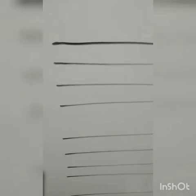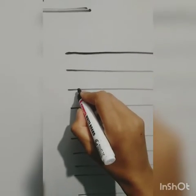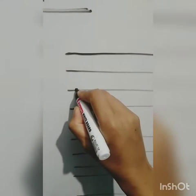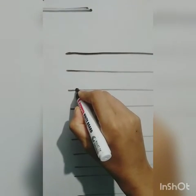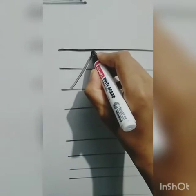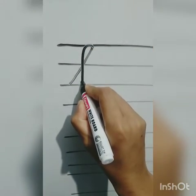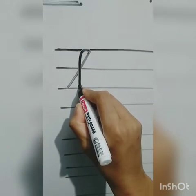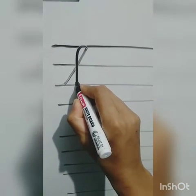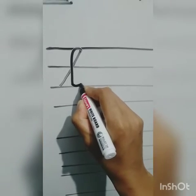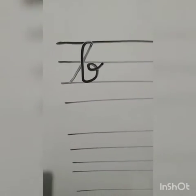To form small cursive B, we have to start from the third line. Then you have to make a slanting line, a standing line like you have done in L. Then a small curve and a curve.